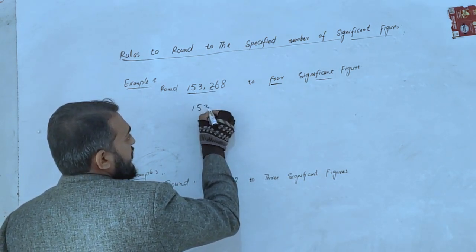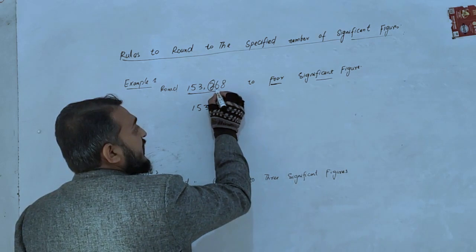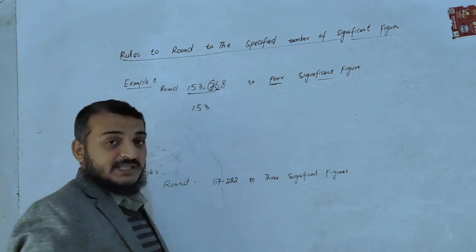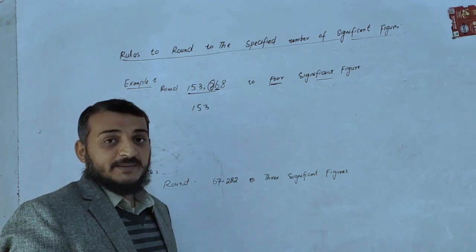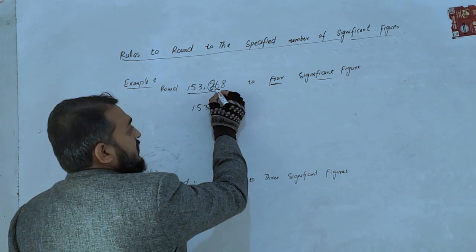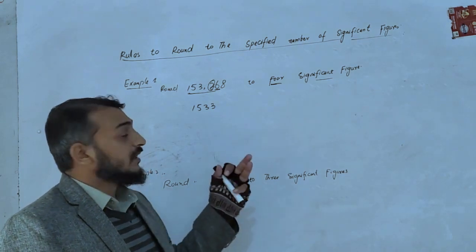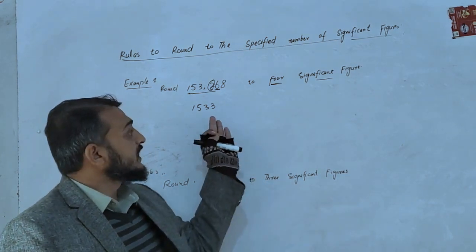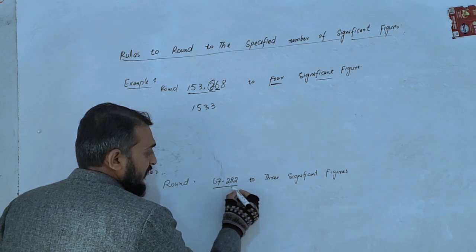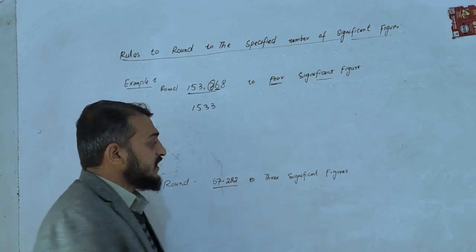153268 rounded to 4 significant figures gives 153300. The digit after the 4th significant figure is 6, which is 5 or greater, so we round up. Another example: 67.2 rounded to 3 significant figures — the third significant figure is 2.